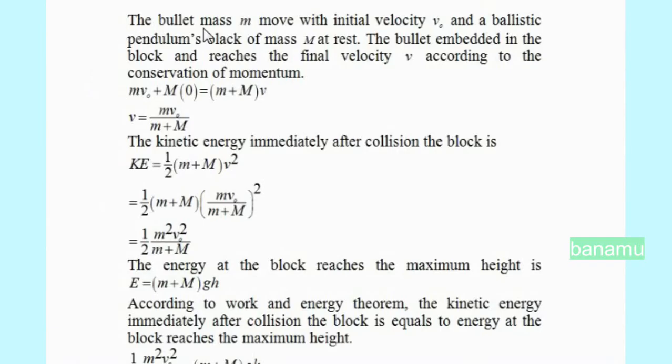The bullet mass m moves with initial velocity V0, and the ballistic pendulum's block of mass capital M is at rest. The bullet embedded in the block reaches final velocity V. According to conservation of momentum, mV0 plus M times zero equals m plus M times V.